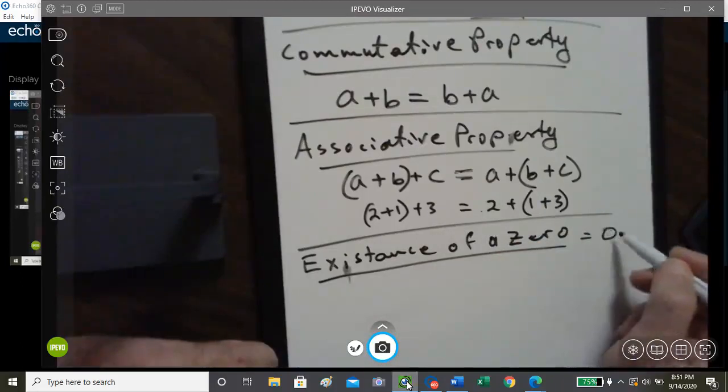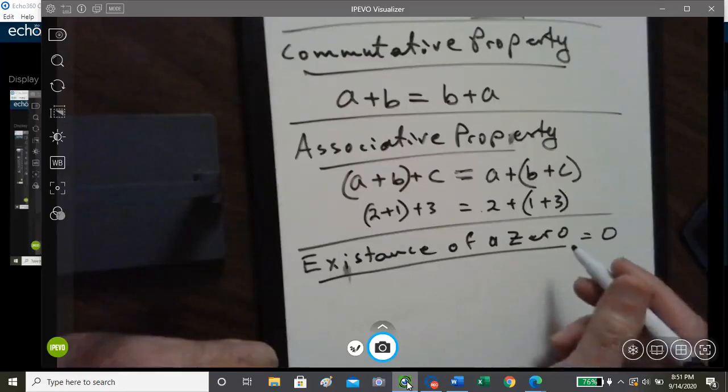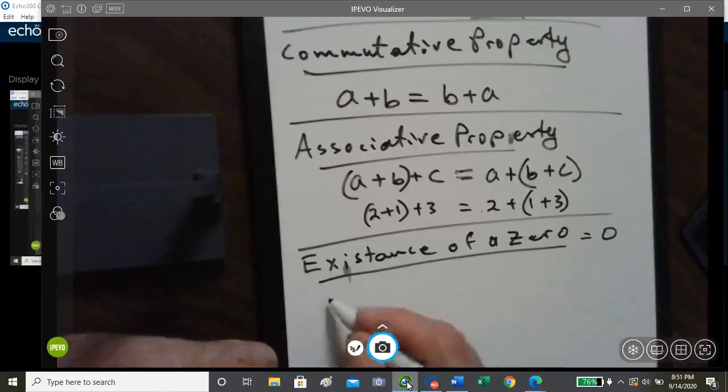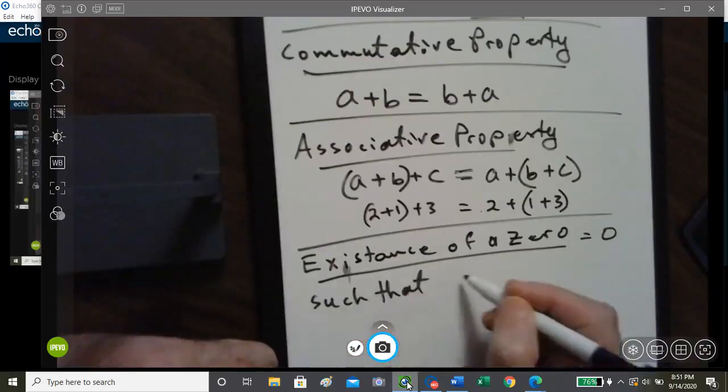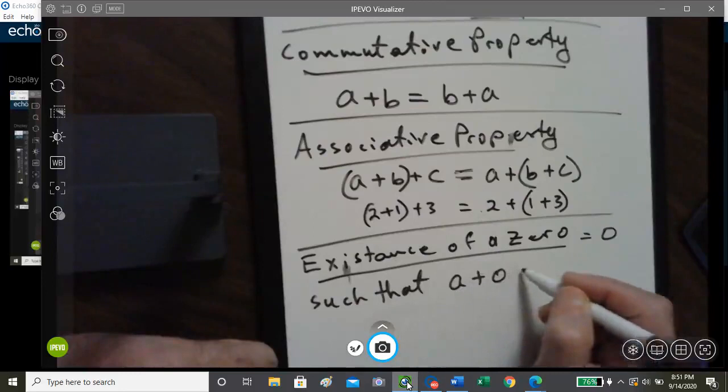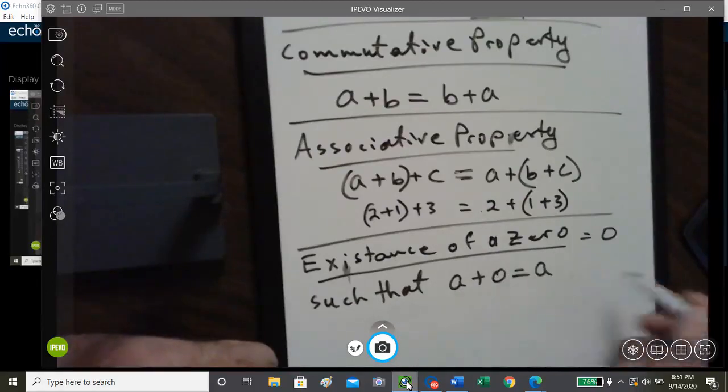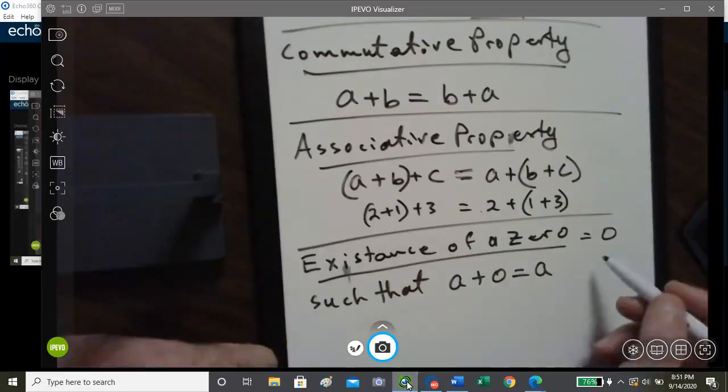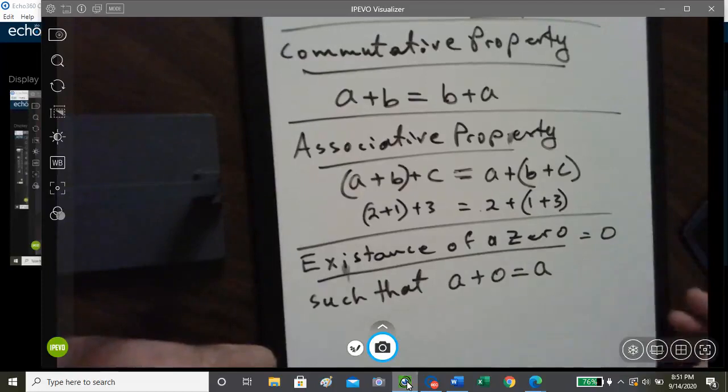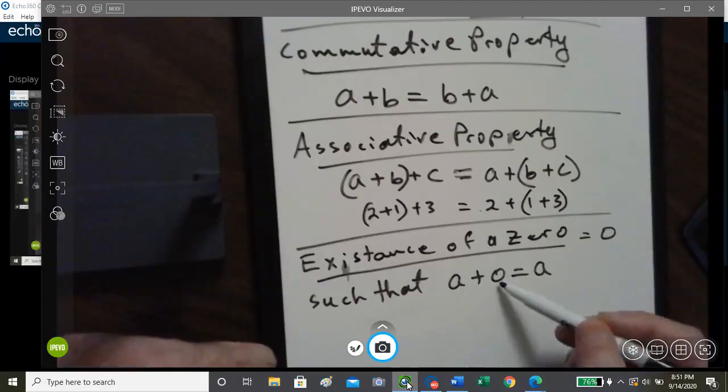Not O, but zero, such that we'll call this sum number A plus zero is equal to A. And this would also be known as the identity property of Addition.